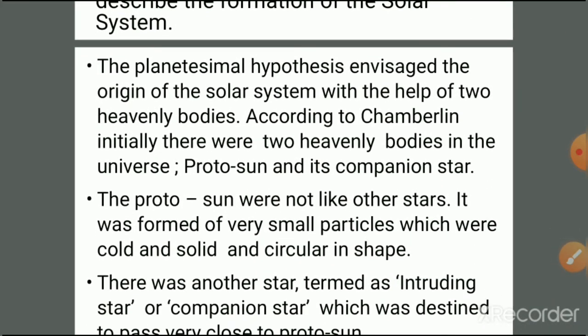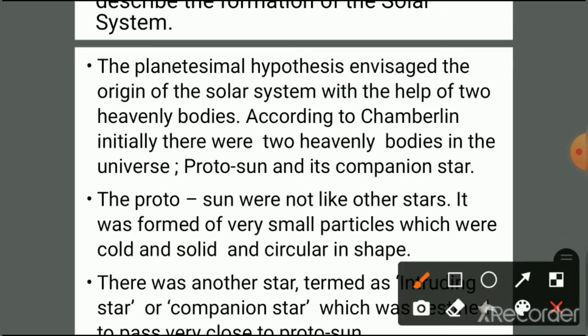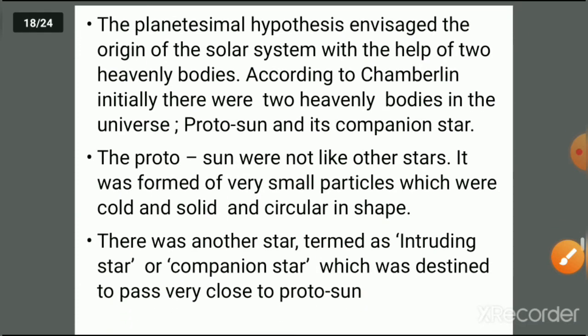According to this theory, there are two heavenly bodies: a proto-sun and a companion star. The proto-sun was not like other stars — it was formed of very small particles which were cold, solid, and circular in shape. Another star, termed the intruding star or companion star, was destined to pass very close to the proto-sun.